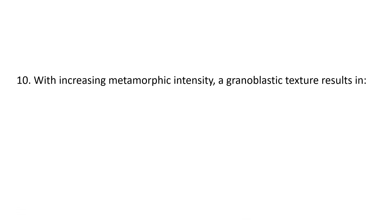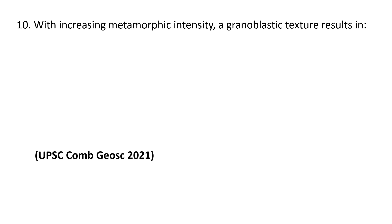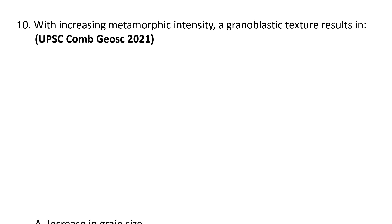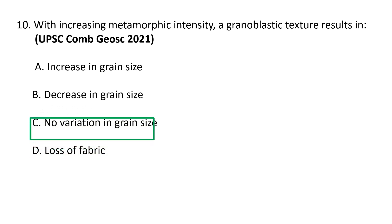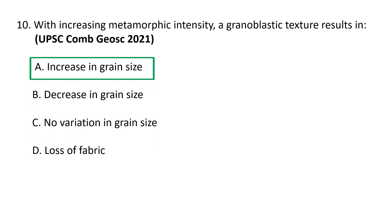Question 10: With increasing metamorphic intensity, a granoblastic texture results in: (a) increase in grain size, (b) decrease in grain size, (c) no variation in grain size, or (d) loss of fabric. With increasing metamorphic intensity, granoblastic texture results in increase in grain size. Granoblastic texture is a typical texture formed in metamorphic rock when grains mutually adjust their boundaries in the solid state in an attempt to achieve textural equilibrium.